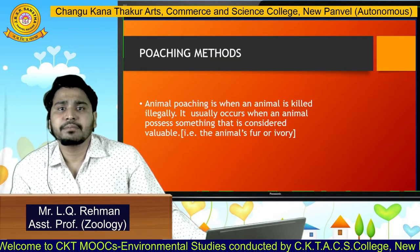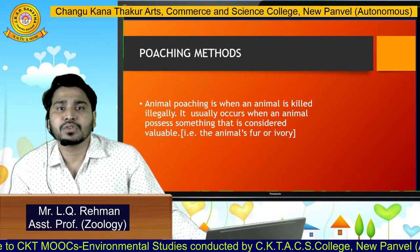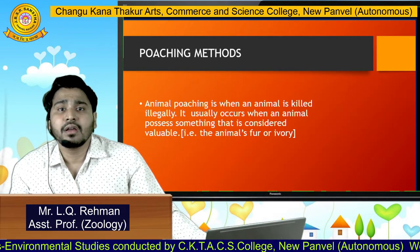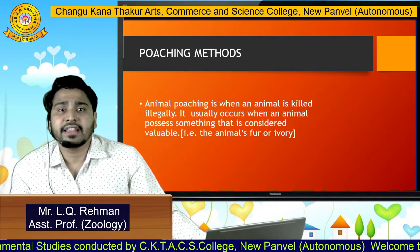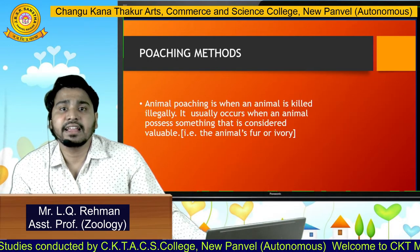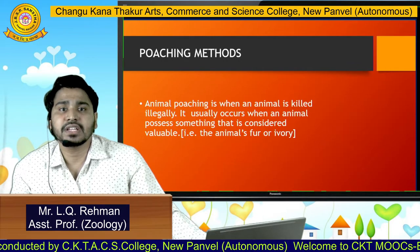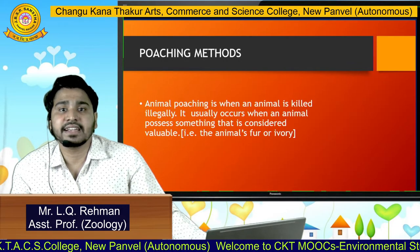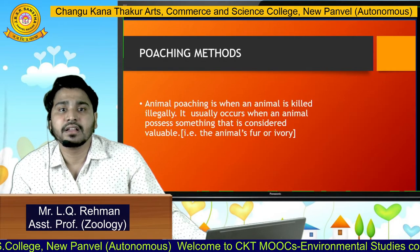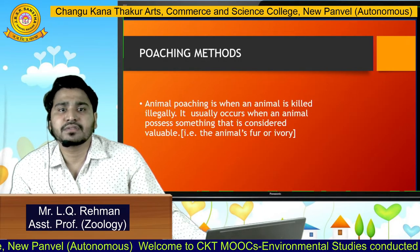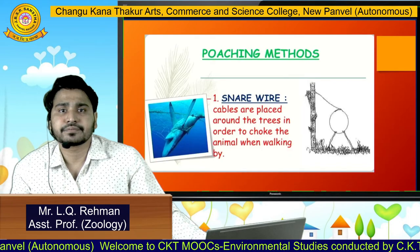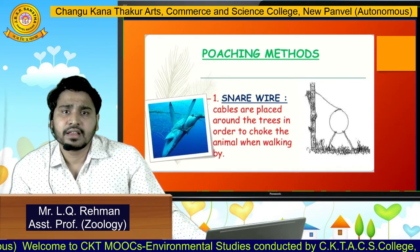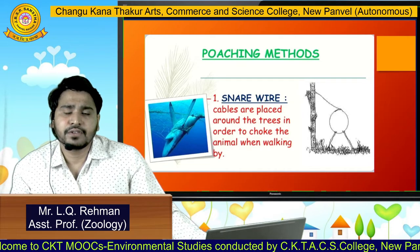Now, poaching methods. There are different poaching methods by which animal poaching can be done. Animal poaching is when an animal is killed illegally. It usually occurs when an animal possesses something that is considered valuable, such as animal fur or ivory. We will study a few of these methods.